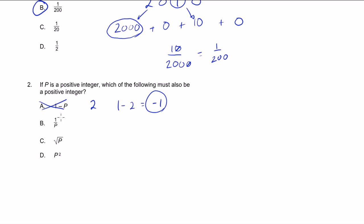1 over P. Well, once again, I'm just picking 2 at random. It's a positive integer. If P is 2, then 1 over 2 is not a positive integer. So it can't be B. Let me cross that out.